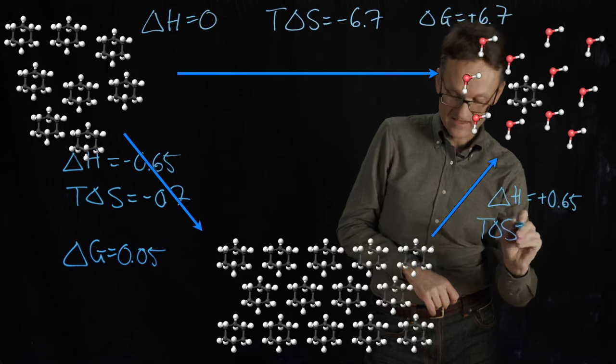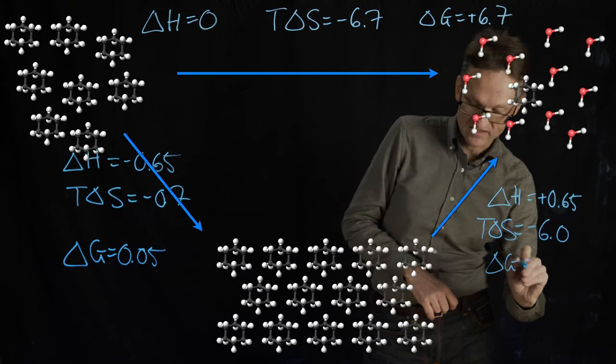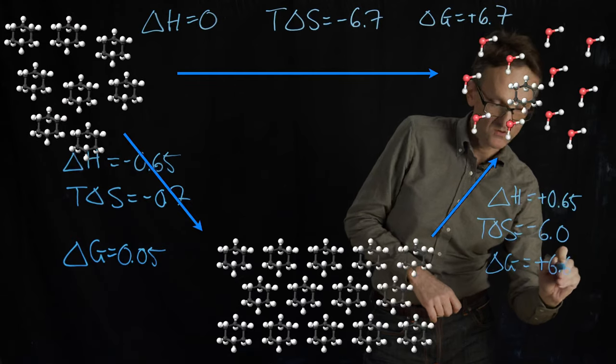TΔS would be minus 6.0 and as a consequence ΔG would be roughly 6.65.